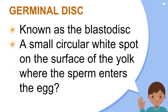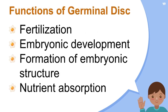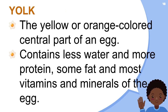The germinal disc, also called the blastodisc, is a component of the embryo's early growth. Its main function is fertilization — it includes the female's genetic material, including the ovum's nucleus. When a male sperm enters the egg at the germinal disc, fertilization begins using the genetic material of both parents. After fertilization, the germinal disc goes through cleavage — a sequence of cell divisions giving rise to embryonic cells — ultimately forming the blastoderm from which the embryo develops. The germinal disc is also where the growing embryo receives its initial supply of nutrients from the yolk.